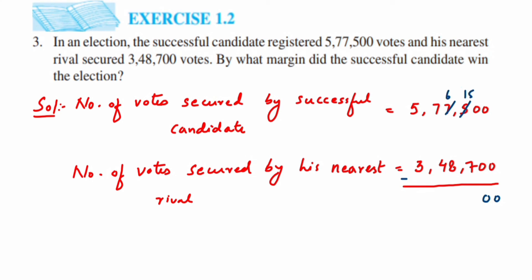Then 6 minus 8 — we cannot do it again, so we take a borrow: 7 becomes 6 and 6 becomes 16. So 16 minus 8 is again 8. Now 6 minus 4 is 2. Then 5 minus 3 is 2. So the answer is 2,28,800.